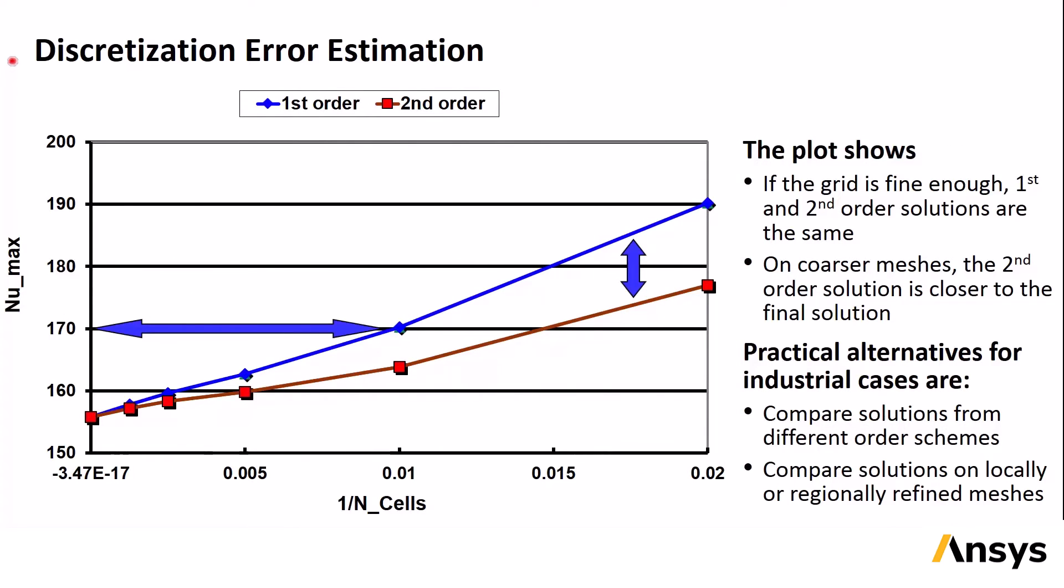The results of the study are shown on this slide. The y-axis of this plot shows the maximum Nusselt number on the bottom wall as calculated on the different grids. The x-axis is the inverse of the total number of cells, so the left of the graph represents calculations performed on the finest meshes. The results from the first-order calculations are shown in blue, and the results from the second-order calculation are shown in red. The very leftmost point on the curves is obtained from an extrapolation technique. The grid shows that if the grid is fine enough, either first-order or second-order discretization give the same solution, and the second-order results on the coarser grids are always closer to the final solution, which is why it's always recommended to use second-order discretization.